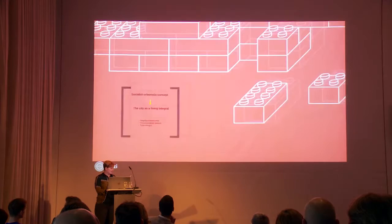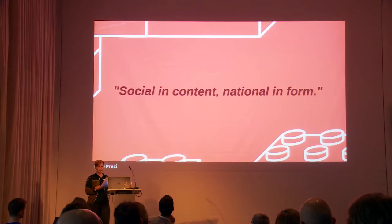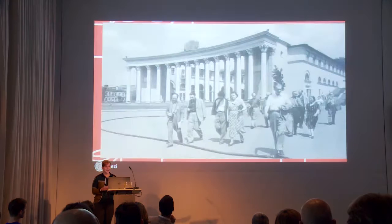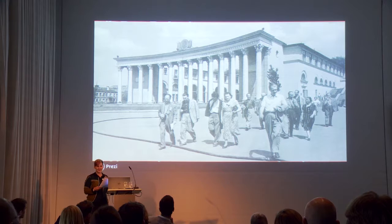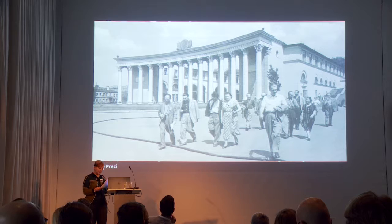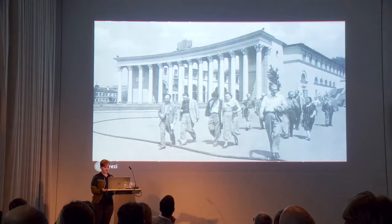Socialist in content, national in form — these were the cornerstones of socialist realist architecture. Since most Hungarian architects were unwilling to accept the grandiose Soviet style, they were taken on so-called study tours to the Soviet Union, and they also received Soviet advisers to correct their plans. This new style was an important milestone for post-war Hungarian architecture.